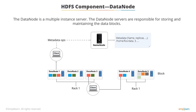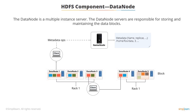The data node is a multiple-instance server; there can be n number of data node servers, depending on the type of network and the storage system. The data node serves, stores, and maintains the data blocks. The name node server provisions the data blocks based on the type of job submitted by the client. Data node also stores and retrieves the blocks when asked by clients or the name node, and performs block creation, deletion, and replication on instruction from the name node.